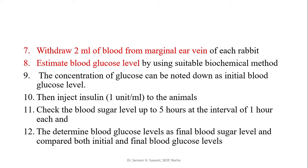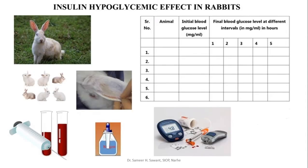Inject one unit per ml to the animal, then check the blood sugar level up to five hours afterward at intervals of one hour each. Determine blood glucose level as the final blood sugar level and compare initial and final blood glucose levels. Prepare the observation table with initial blood glucose level in one column and final blood glucose levels at different time intervals in another.